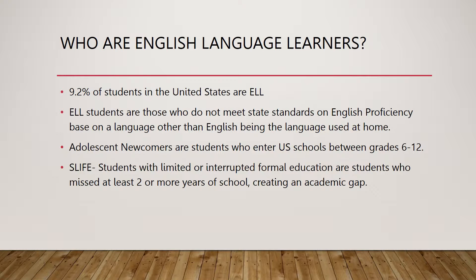Adolescent newcomers are one group of ELL students who enter U.S. schools between grades 6 and 12. SLIFE — students with limited or interrupted formal education — are students who missed at least two or more years of school, creating a grading and academic gap.